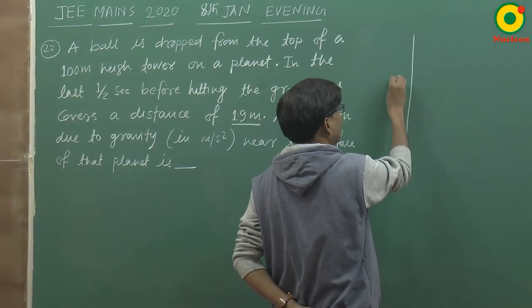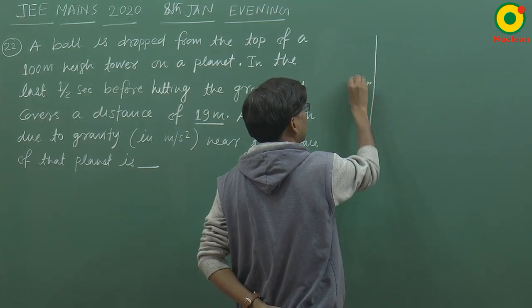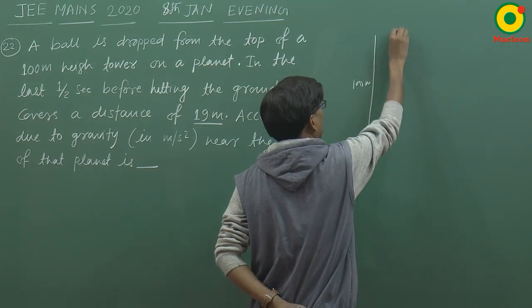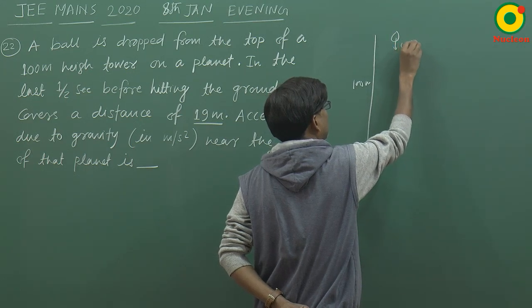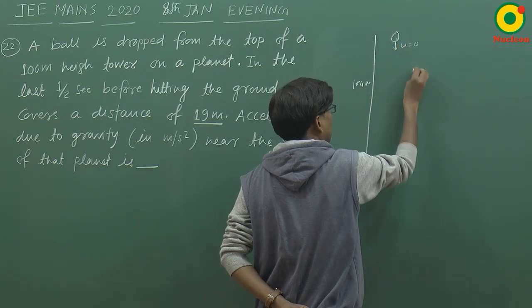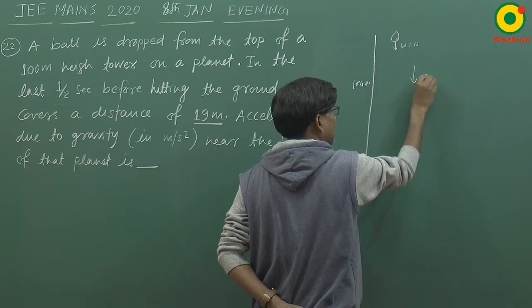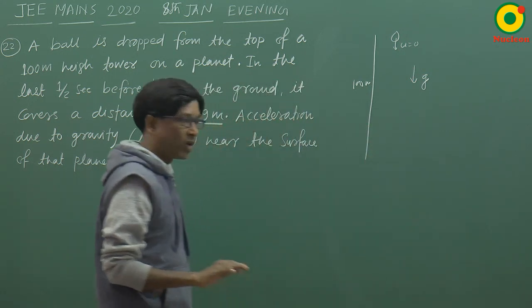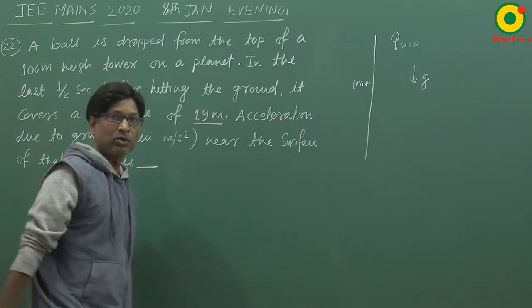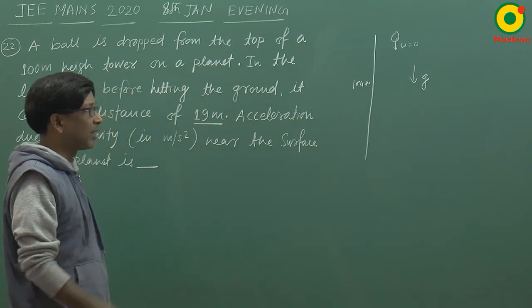100 meter ऊपर से ball को drop किया गया, यानि इसका initial velocity होगा 0। Acceleration होगा G — यह जो G है वो Earth पर जो G होता है वो नहीं है, यह कुछ different है क्योंकि planet दूसरा है।